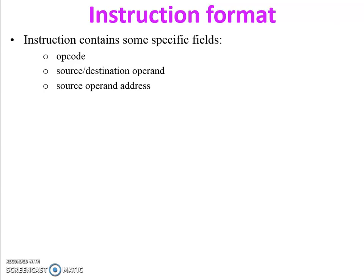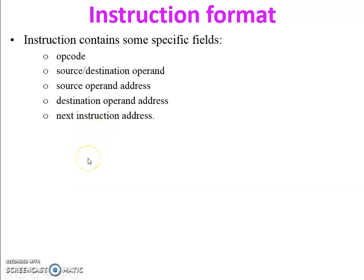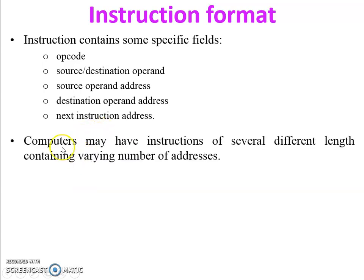After completion or execution of the operation, the result will be stored in some operand — it is called the destination operand. Source operand address is where the operand will be stored inside the memory. Destination operand address means where the result will be stored. Next instruction address determines which instruction will come after the current one is executing.